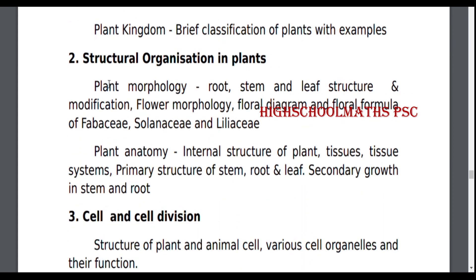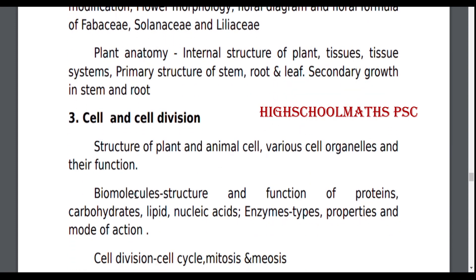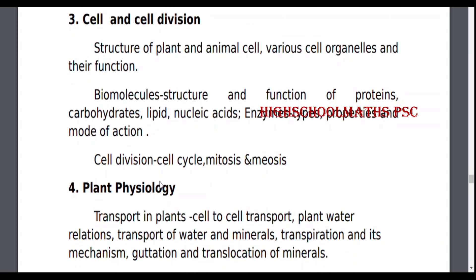Structural Organization in Plants: Plant Morphology and Plant Anatomy. Cell and Cell Division: Structure of Plant and Animal Cell, Various Cell Organelles and their Functions. Biomolecules: Structure and Function of Proteins, Carbohydrates, Lipids, Nucleic Acids. Enzymes — Types, Properties and Modes of Action. Cell Division: Cell Cycle, Mitosis and Meiosis.